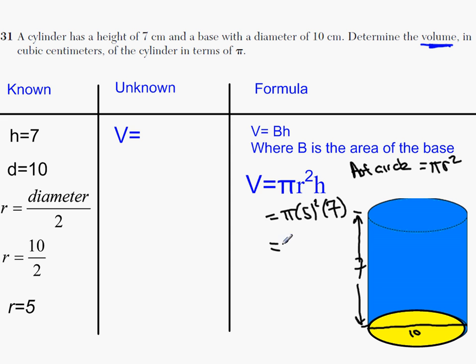So you got pi times 5 squared, that's 25, times 7. So what's 25 times 7? I don't have a calculator on me but I know 25 times 7. 20 times 7 is 140. 140 plus 7 times 5 is 35. That's going to be 175 pi.